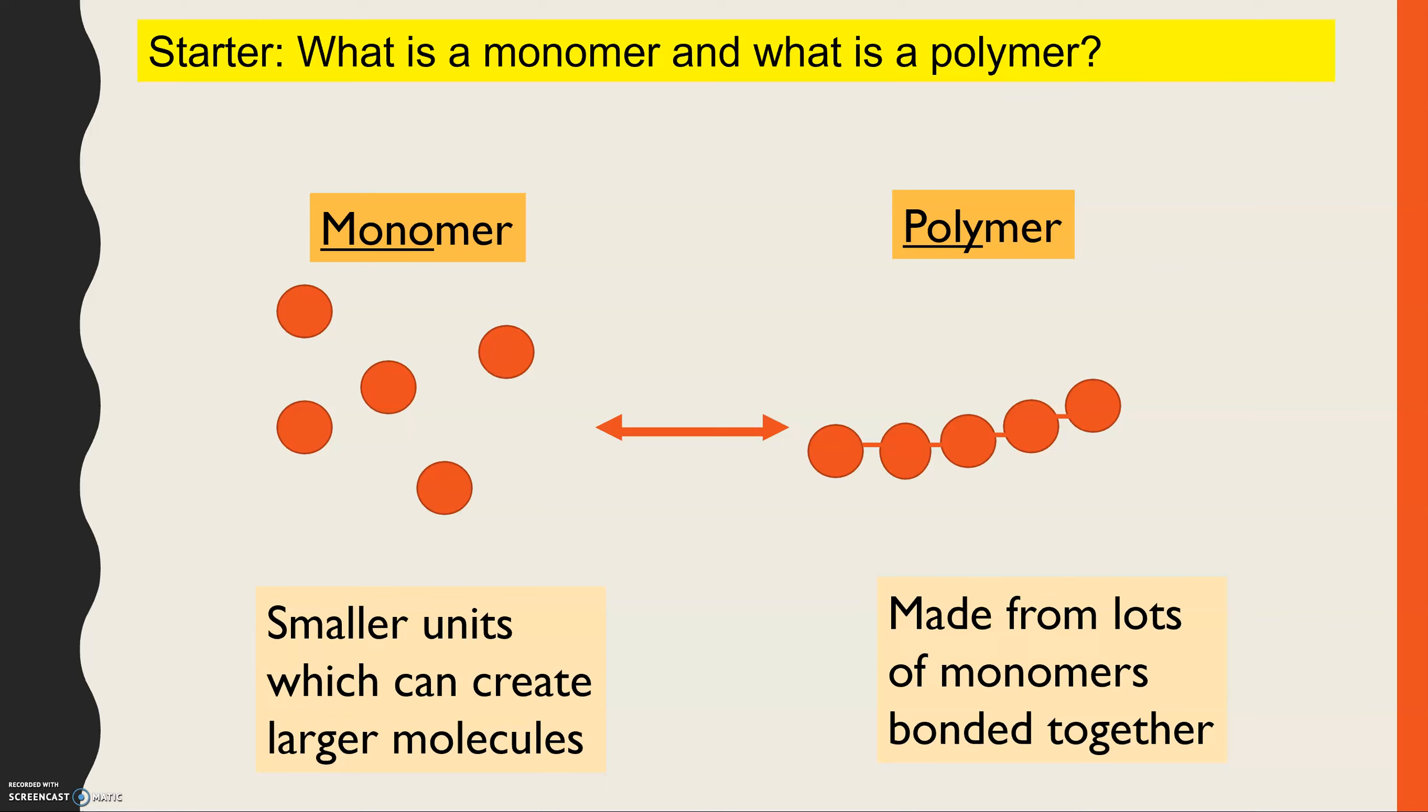So you might have drawn something like this, showing these individual units under monomers and a chain all bonded together under the polymers. And the actual definition for a monomer is it's smaller units which can create larger molecules. So it's the smaller singular or one, which is what mono unit is.